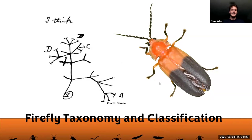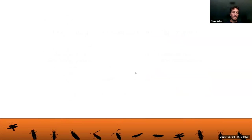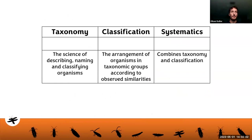We're going to talk a little bit about firefly taxonomy and classification. This can be a bit of a dry topic, so we don't want to go too much into this. Charles Darwin had one of the first trees, where based on his finding of evolution, he kind of started to classify animals and plants. This is what he drew famously in one of his books. So we're going to talk about taxonomy, classification, and systematics — terms you might come across when reading about fireflies in papers.